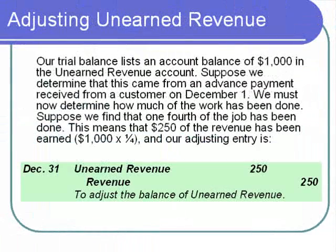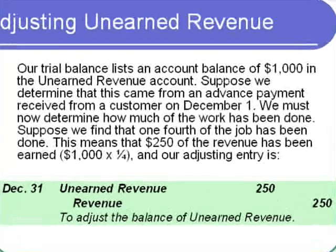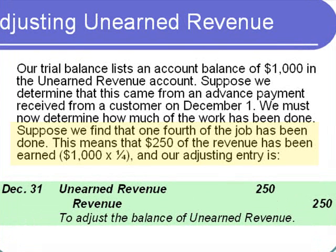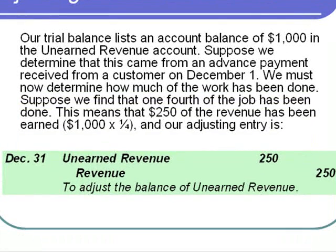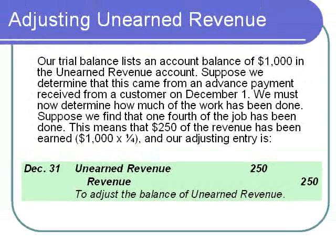Our trial balance lists an unearned revenue account with a balance of $1,000. Suppose this came from an advance payment received from a customer on December 1st. We must determine how much of the work has been done to see how much revenue has been earned. If one-fourth of the job has been completed, then one-fourth of $1,000, or $250, has been earned. The adjusting entry is a credit to the revenue account for $250 and a debit to unearned revenue for $250, reducing the liability balance to $750.